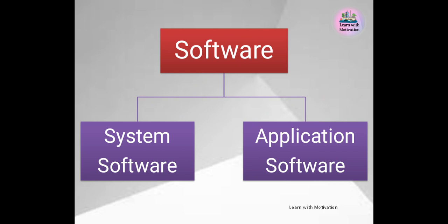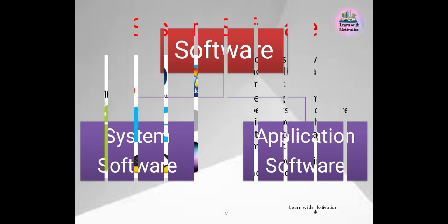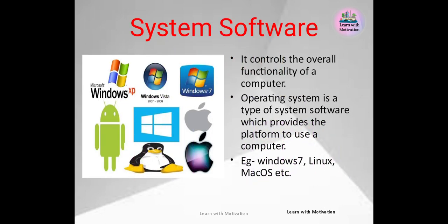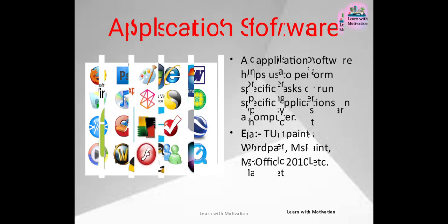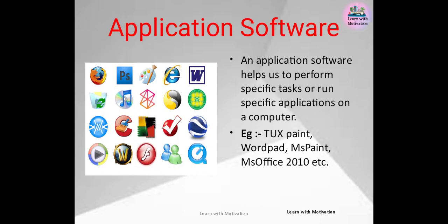Software can be classified into the following categories: system software and application software. System software controls the overall functionality of a computer. Operating system is a type of system software which provides the platform to use a computer — for example, Windows 7, Linux, macOS etc. Application software helps us to perform specific tasks or run specific applications on a computer — for example, Tuxpaint, WordPad, MS Paint, MS Office 2010 etc.